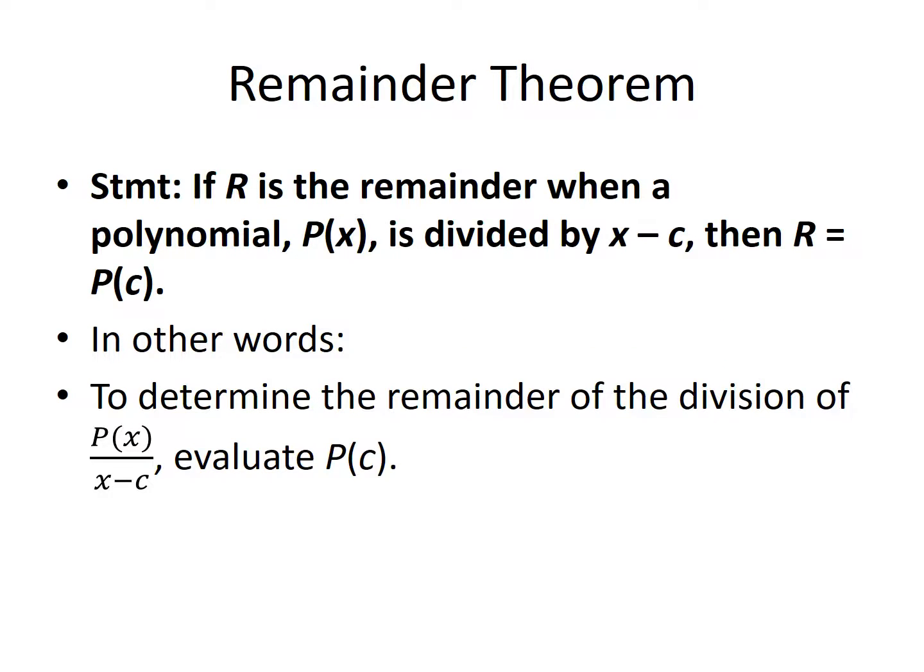The remainder theorem is stated below. If r is the remainder when a polynomial p of x is divided by x minus c, then r, that remainder, is equal to p of c. In other words, to determine the remainder of the division of a polynomial p of x divided by x minus c, we may simply evaluate the polynomial at the value c.